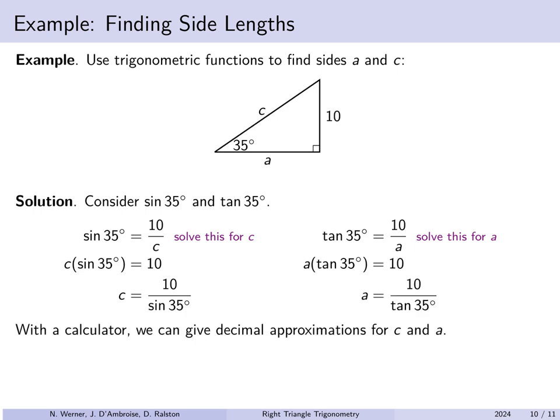With a calculator we can get decimal approximations for sine and tangent of 35 degrees. Make sure your calculator is in degree mode — the other mode for trigonometric functions is radians, which we have not yet introduced. In degree mode, c is approximately 17.43 and a is approximately 14.28.